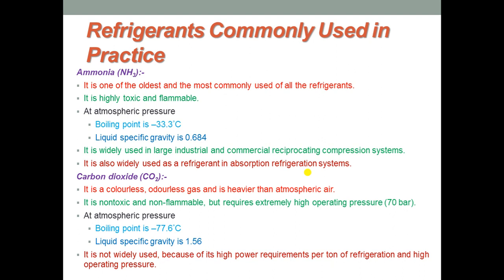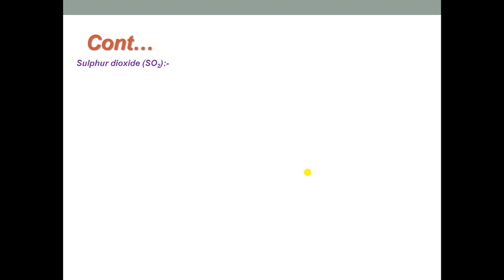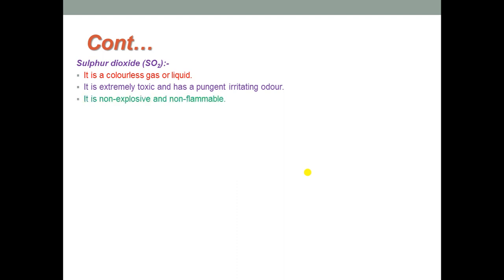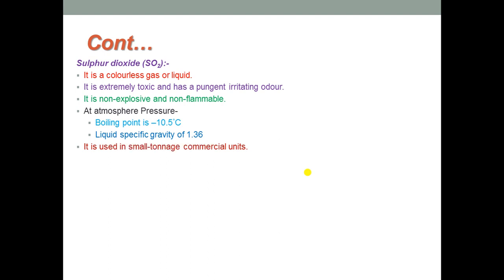Carbon dioxide is not widely used because of its high power requirement per ton of refrigeration and high operating pressures. The next is sulfur dioxide, the third common type of refrigerant. It is a colourless gas or liquid, extremely toxic with a pungent irritating odour. It is non-explosive and non-flammable, has a boiling point of -10.5°C and liquid specific gravity of 1.36. It is used in small tonnage commercial units.